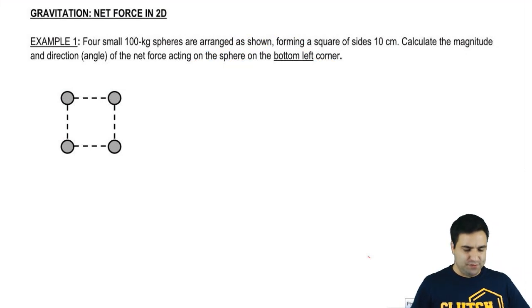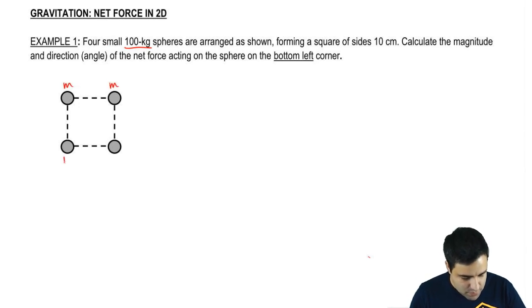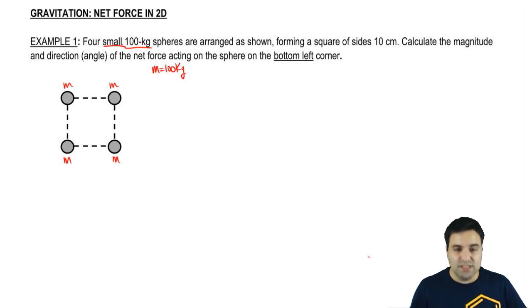Alright, so here I have four small spheres, they're all 100 kilograms. I can just say these are all m's, and m equals 100 kilograms. They're small, which means we can disregard the size of their radius. Their arrangement is shown forming a square of sides 10 centimeters.